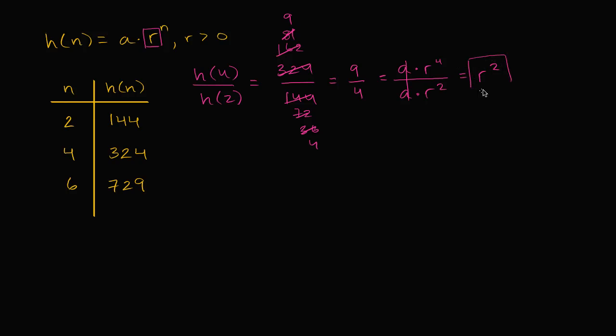And so we have a nice little equation set up. r squared needs to be equal to 9 fourths. So r squared is equal to 9 fourths. And r needs to be greater than zero, so we could just say r is going to be the principal root of 9 fourths, which is equal to 3 halves. So we were able to figure out r.